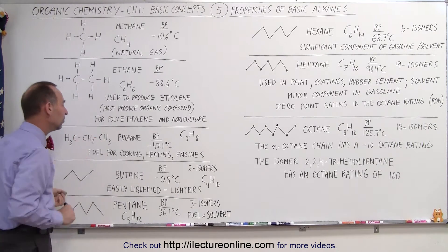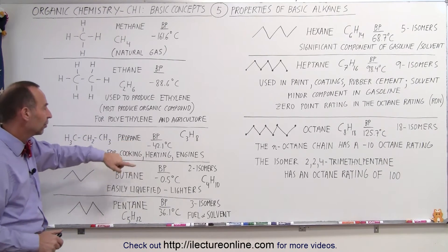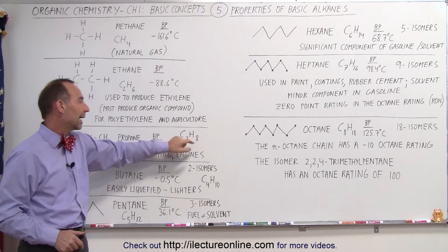Propane means that it has three carbons. The boiling point of propane is minus 42.1 degrees centigrade. So its chemical formula is C3H8.